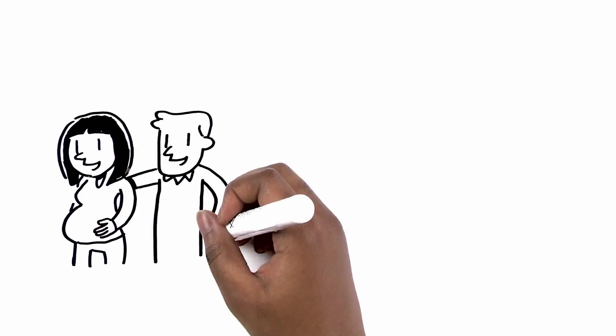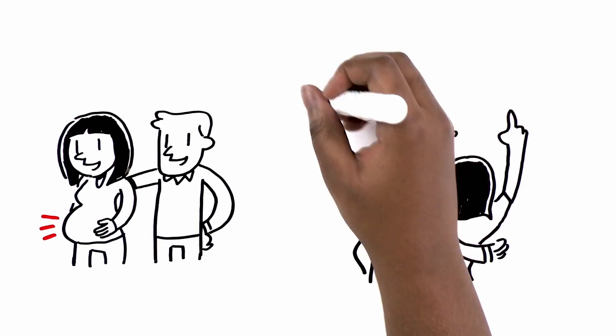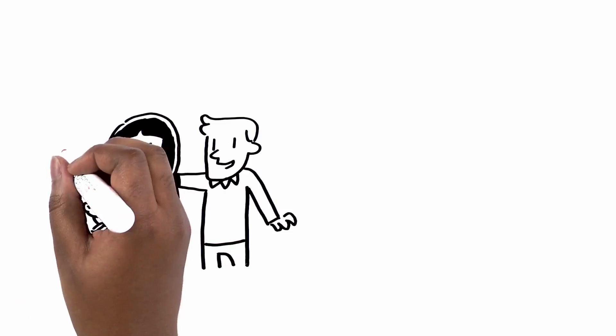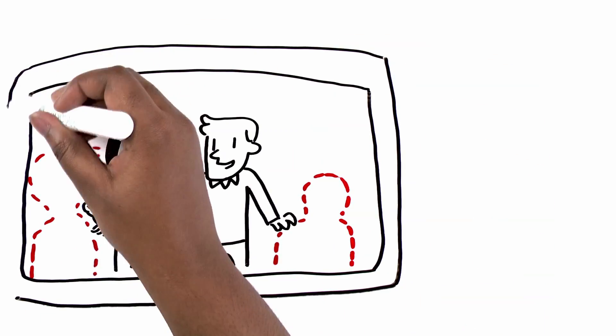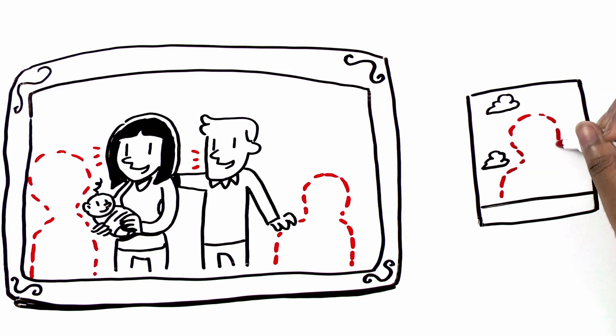Every parent hopes for a healthy baby. In fact, it's the most important thing they wish for when they think about welcoming a son or daughter into the world. The decision to start a family or have another child isn't always easy. This decision is especially difficult for families who know their child is at risk of inheriting a genetic disease.